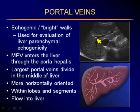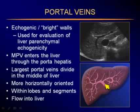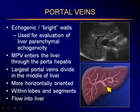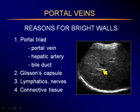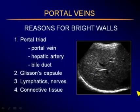Portal veins have bright echogenic walls, and we use this for comparison of parenchymal echogenicity. The main portal vein enters the liver through the porta hepatis and almost immediately splits into right and left portal veins. The largest portal veins divide horizontally approximately in the middle of the liver, supplying lobes and segments and carrying blood flow into the liver. The reason portal veins have bright walls is the portal triads — the portal vein, the little hepatic artery, and the bile duct — plus reflectivity from Glisson's capsule, lymphatics, nerves, and connective tissue around the triads.